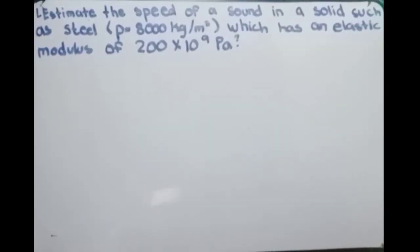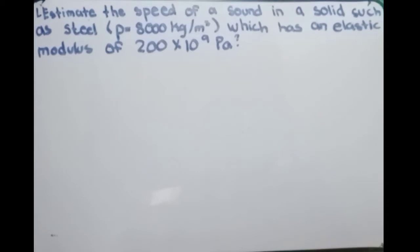Good day everyone. In today's discussion of speed of sound in solid, liquid, and gas, let's start with our first example problem: estimate the speed of sound in a solid such as steel, which has a density of 8000 kilograms per cubic meter and an elastic modulus of 200 times 10 to the 9 pascals.